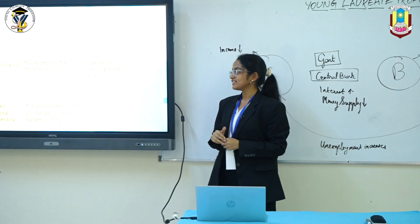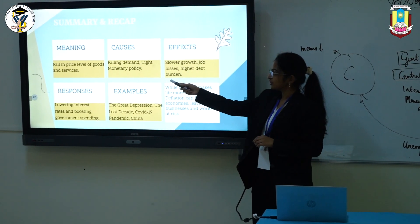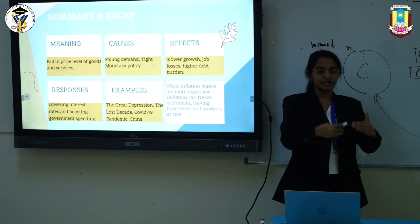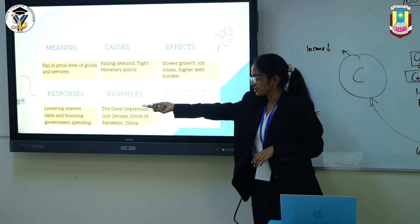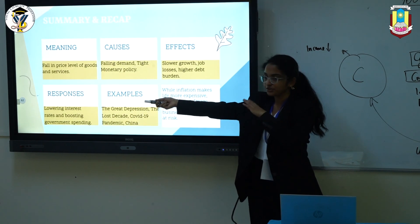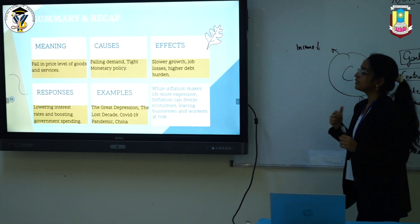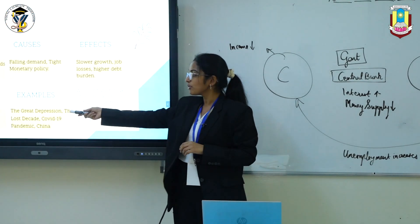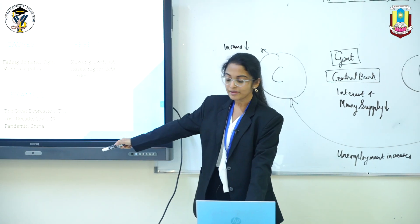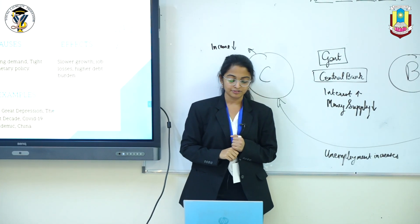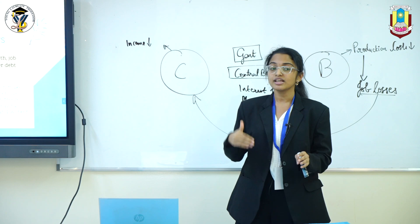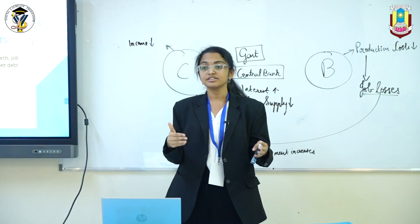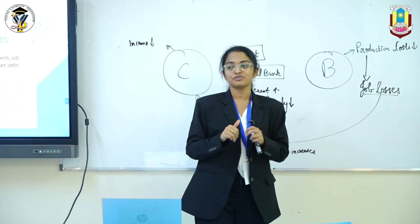That's all for today's session. What we learned today was the meaning of deflation — the fall in prices of goods and services in an economy — how deflation happens, what happens during deflation, the policy responses to control deflation, and real life examples including the Great Depression, Japan's Lost Decade, the COVID-19 pandemic, and China's recent deflation. While inflation makes life expensive, deflation makes both businesses and consumers at risk and can literally freeze economies.